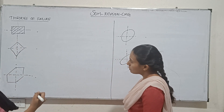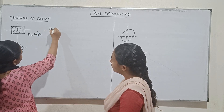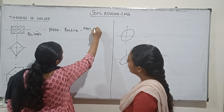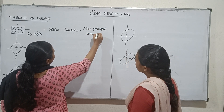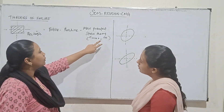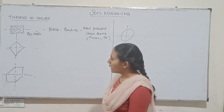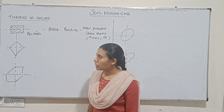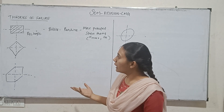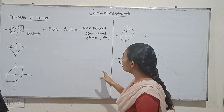First one is rectangle. So rectangle is what theory? It is rectangle — what is rectangle? What material is suitable? It is brittle material. So this is what theory? Maximum Principal Stress Theory, also called Normal Stress Theory. Maximum Principal Stress Theory — for brittle material. What is the theory of failure? Maximum Principal Stress Theory or Normal Stress Theory.